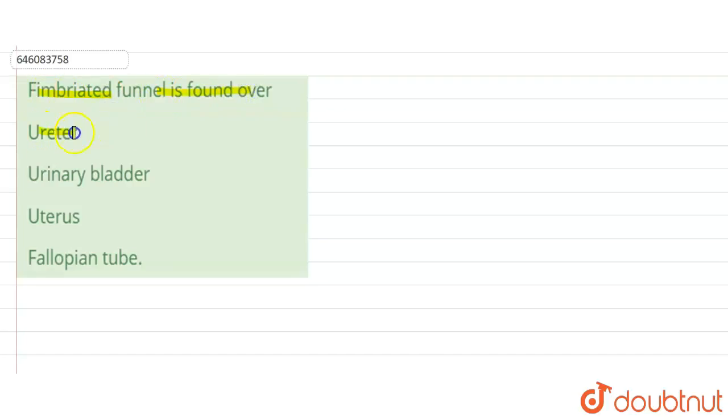So basically, fimbri are finger-like or thread-like structures. Fimbri are found on the edge of a fallopian tube.